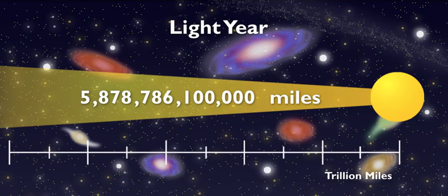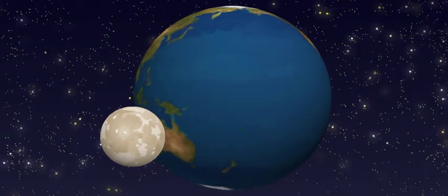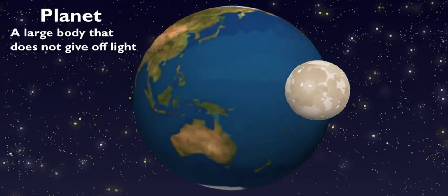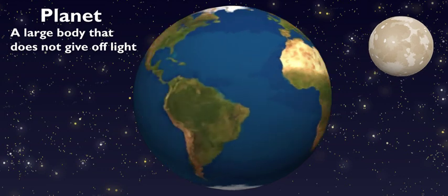My head's spinning just thinking about something that big. Well, let's bring you back down to Earth and talk about something you're a little more familiar with. Planets. What exactly makes a planet a planet, anyway? Well, a planet is basically a large body in space that does not give off light.